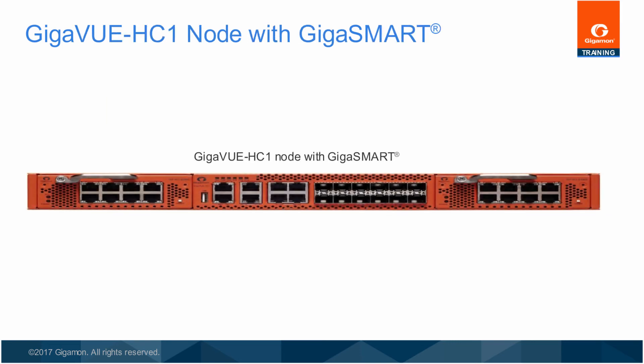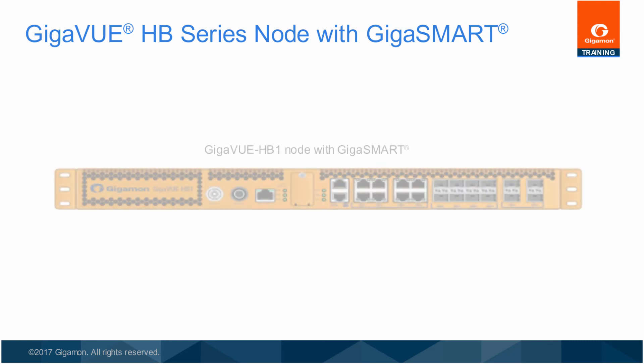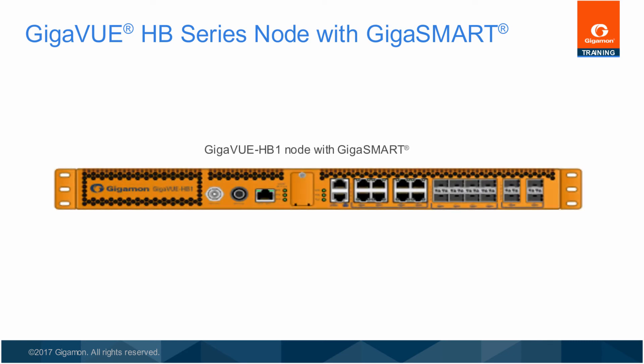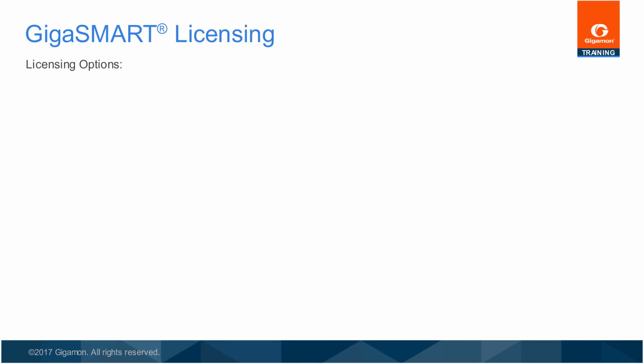Like the larger GigaView HC2, the GigaView HC1 is also a modular chassis, but it also has fixed ports and GigaSmart built into the base chassis. The GigaView HC1 offers the same software features and functionalities as other GigaView H series nodes. Refer to the user documentation for information on the capabilities of the GigaSmart software applications supported on the GigaView HC1 series nodes. The GigaSmart hardware is included in GigaView HB1 nodes, and GigaSmart software application licenses are optionally available for GigaView HB series nodes.